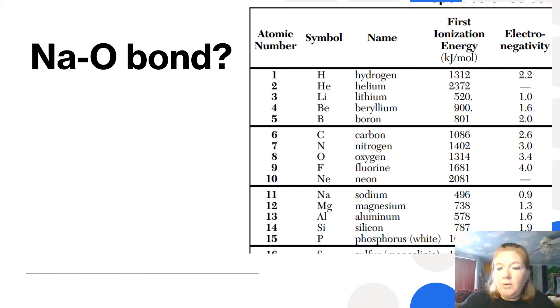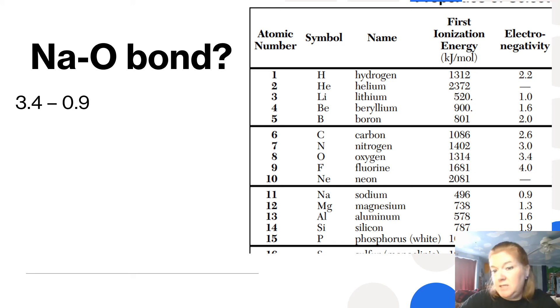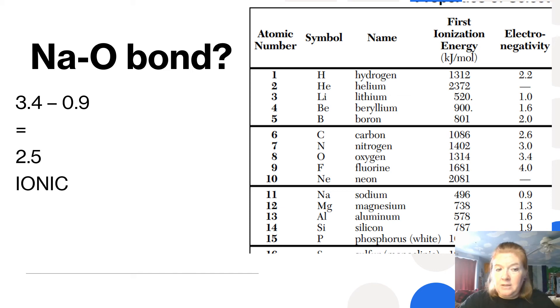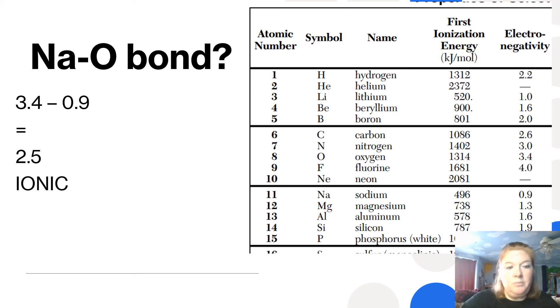What about between sodium and oxygen? Look up those electronegativities and subtract them. This time we get a value greater than 1.7, so it's ionic.